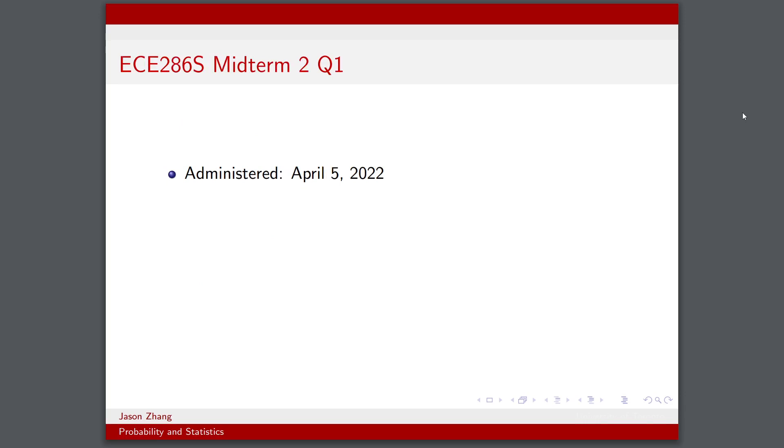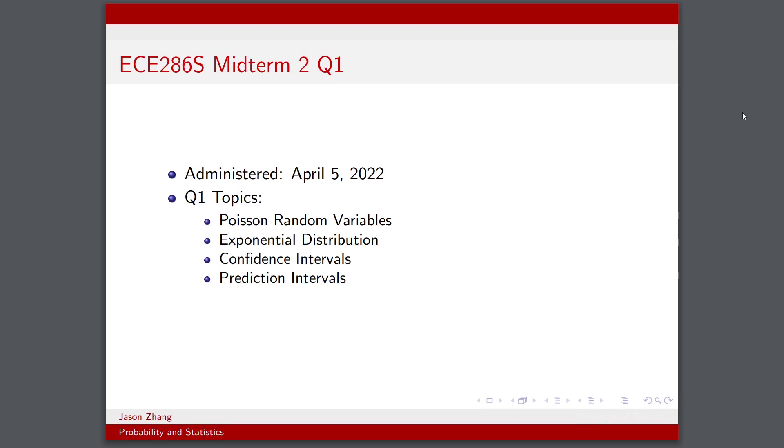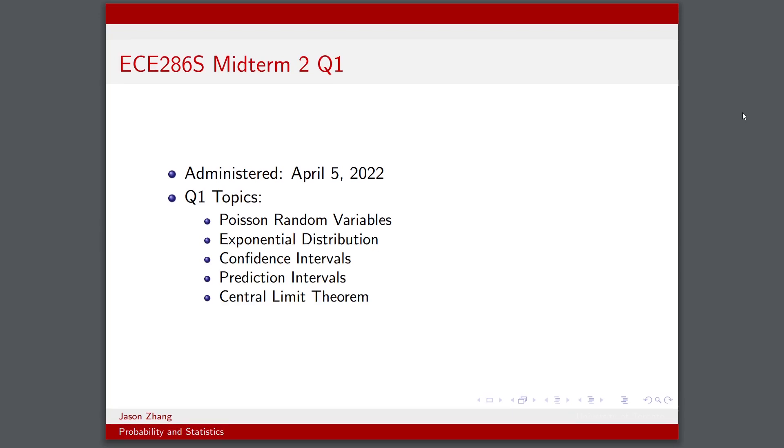So today I'll be going over a quick question from our second midterm. It was question one and we wrote this on April 5th, 2022, quite late into the term. Some of the topics that this question covers include Poisson random variables, the exponential distribution, confidence intervals, prediction intervals, as well as the central limit theorem.